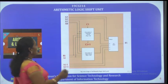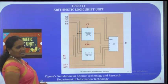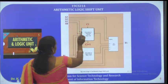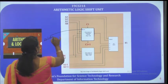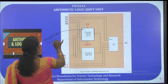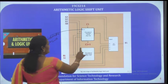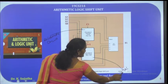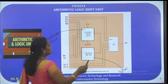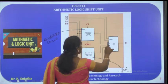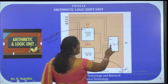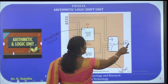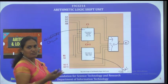Now let us see this circuit. The first rectangular box indicates the arithmetic circuit we discussed earlier. The second rectangular box indicates the logic circuit. The output of the arithmetic logic shift unit is taken through a 4-by-1 multiplexer, having 4 inputs (0, 1, 2, 3), 2 selection inputs, and 1 output Fi, which gives the final output of the arithmetic logic shift unit.